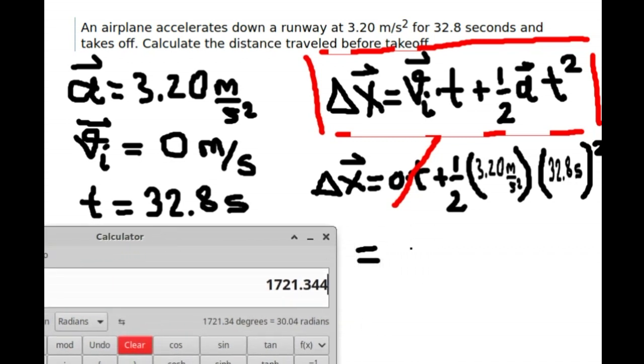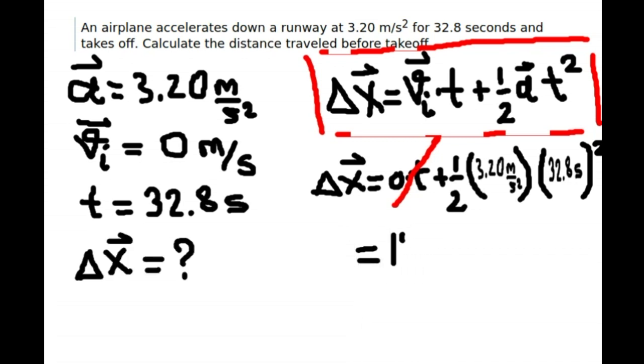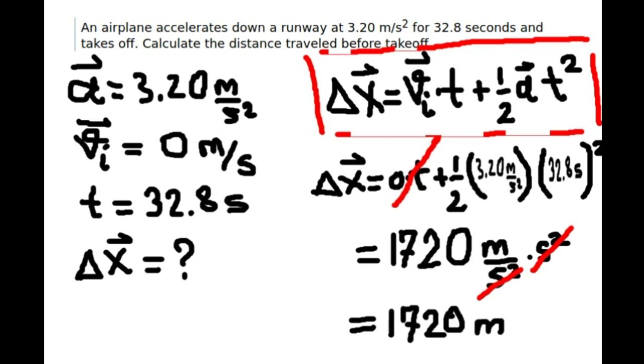So our final answer is 1720. The unit is for acceleration we had m per second squared here, m per second squared. For time it was second but we need to square it, second squared. And the only unit left is m per second squared.